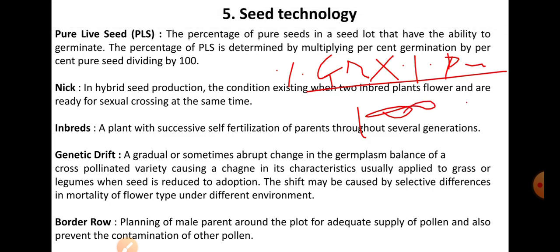Nick: In hybrid seed production, it is the condition existing when two inbred plants flower and are ready for sexual crossing at the same time. Inbreds are plants developed through successive self-fertilization of parents over several generations. Inbreds are developed through selfing or sibbing and are used as a base in hybrid seed production or for generating composites and synthetics. Inbreds are used in cross-pollinated or often cross-pollinated crops, not in self-pollinated crops.